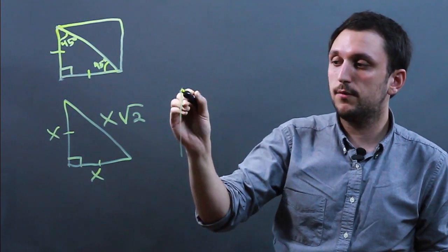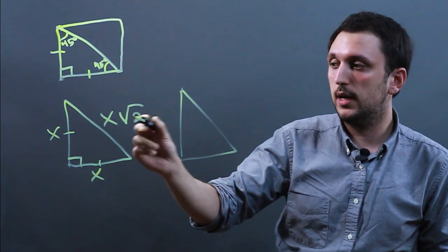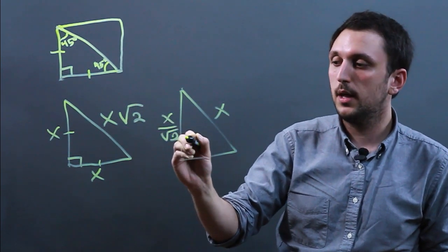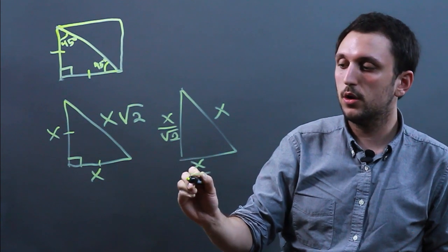It can be weird if you have your diagonal as x. In that case, this will be x over root 2, and this will be x over root 2.